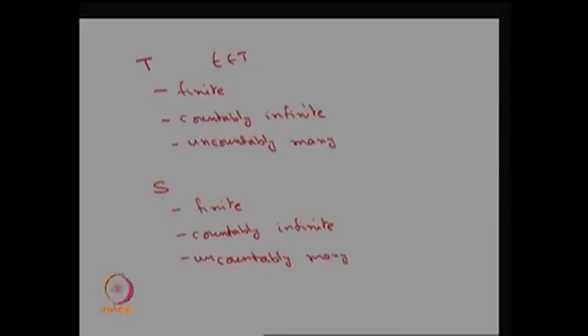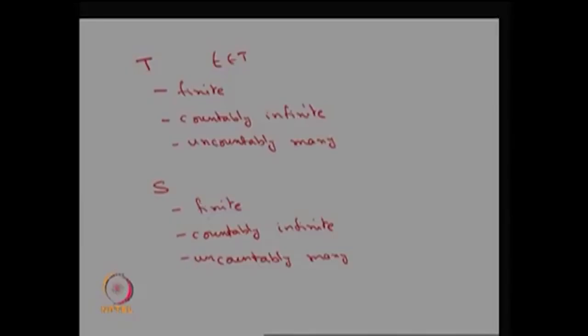Since the state space is the collection of all possible values of X(t), and X(t) is a real-valued function and hence a random variable, its elements are always real numbers. So the state space elements can be finite, countably infinite, or uncountably many — meaning it could be a set of intervals on the real line.